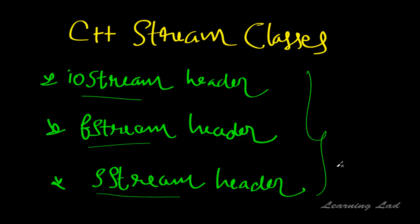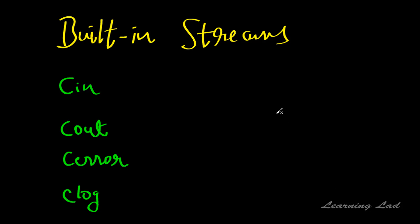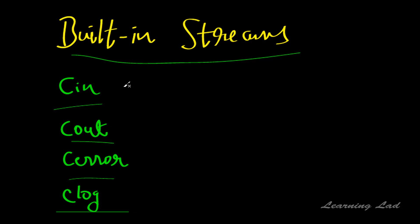The next topic is about built-in streams. When a C++ program starts, four built-in streams are created: cin, cout, cerr, and clog. We have used cin and cout for standard input and standard output. cin takes input from the keyboard and cout produces output on the display. cerr is used for outputting errors, and clog is a buffered version of the error stream. Both cerr and clog output to the display.